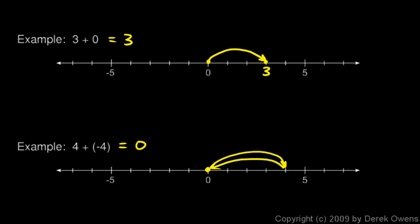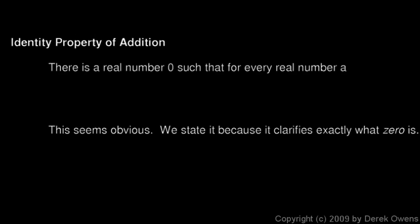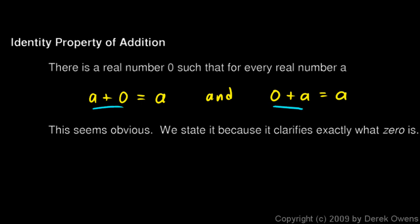Let's look at the properties of addition. The identity property of addition states that there is a real number zero such that for every real number a, a plus zero is equal to a. There's some number called zero that, when we add it to any number, the result is that same number. That seems obvious, but we state it because it helps clarify exactly what zero is — and zero is extremely important. We could also add that zero plus a equals a, but that's clear if you understand that order doesn't matter in addition. Either way, it helps us see that adding zero doesn't change anything.